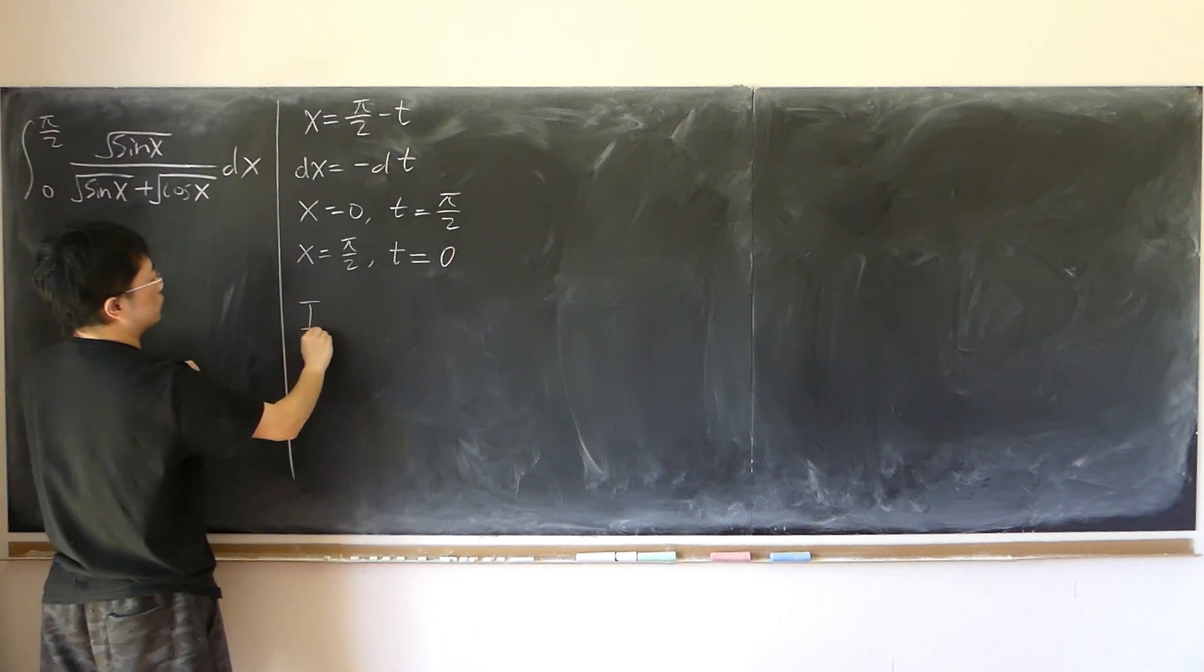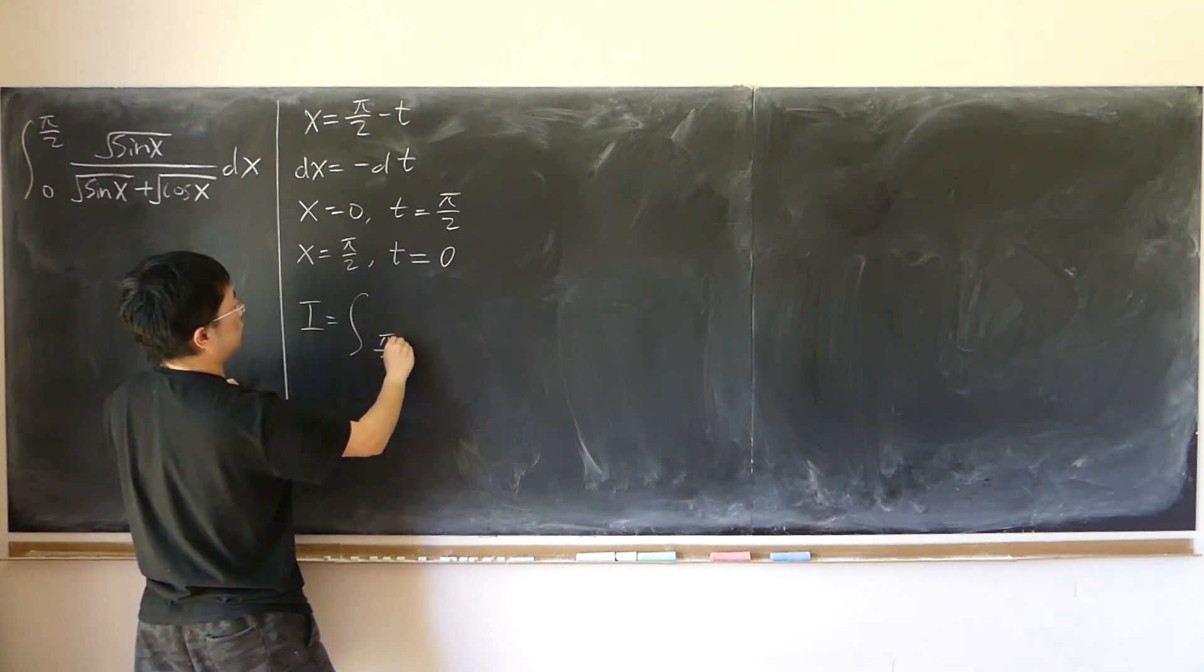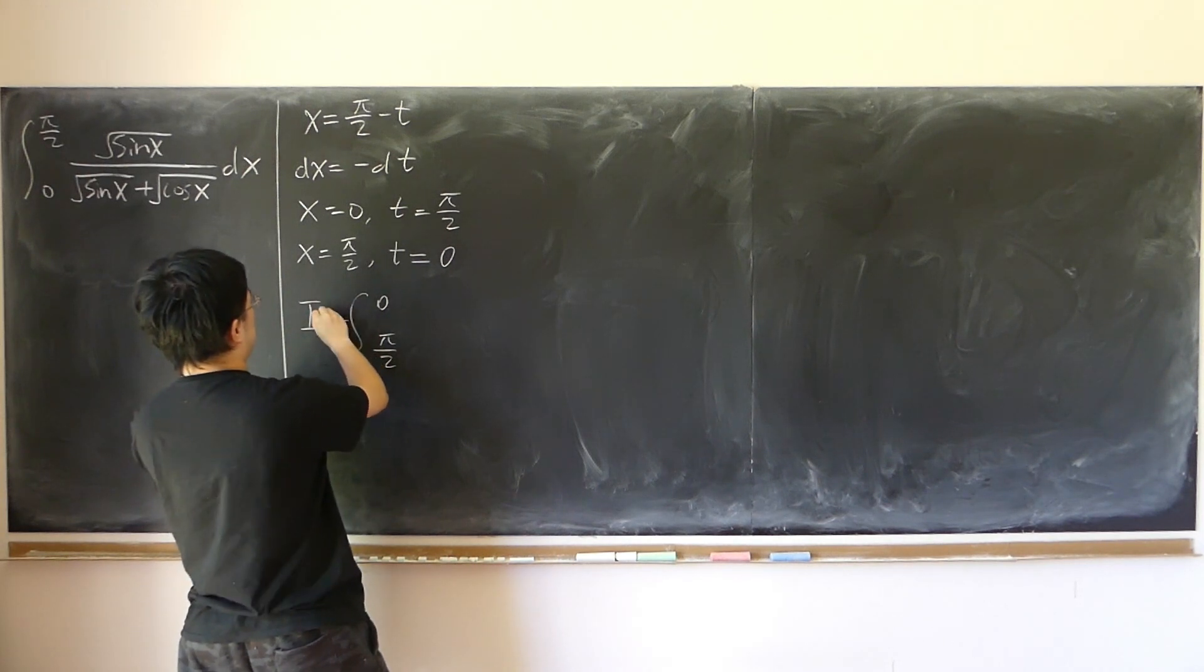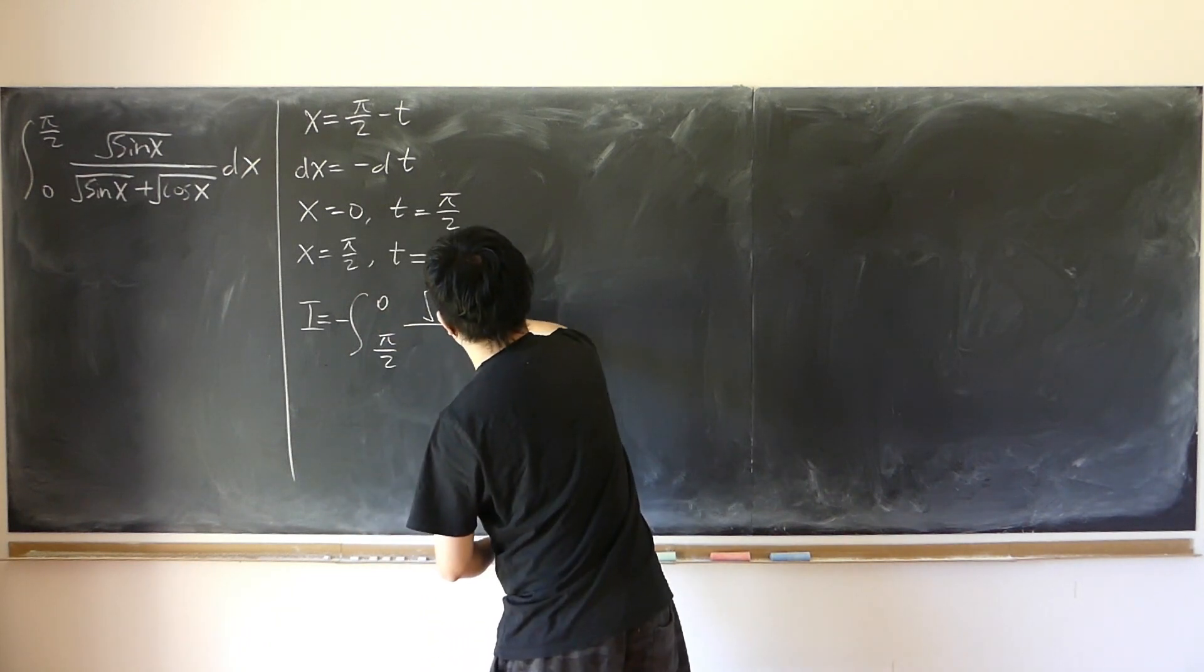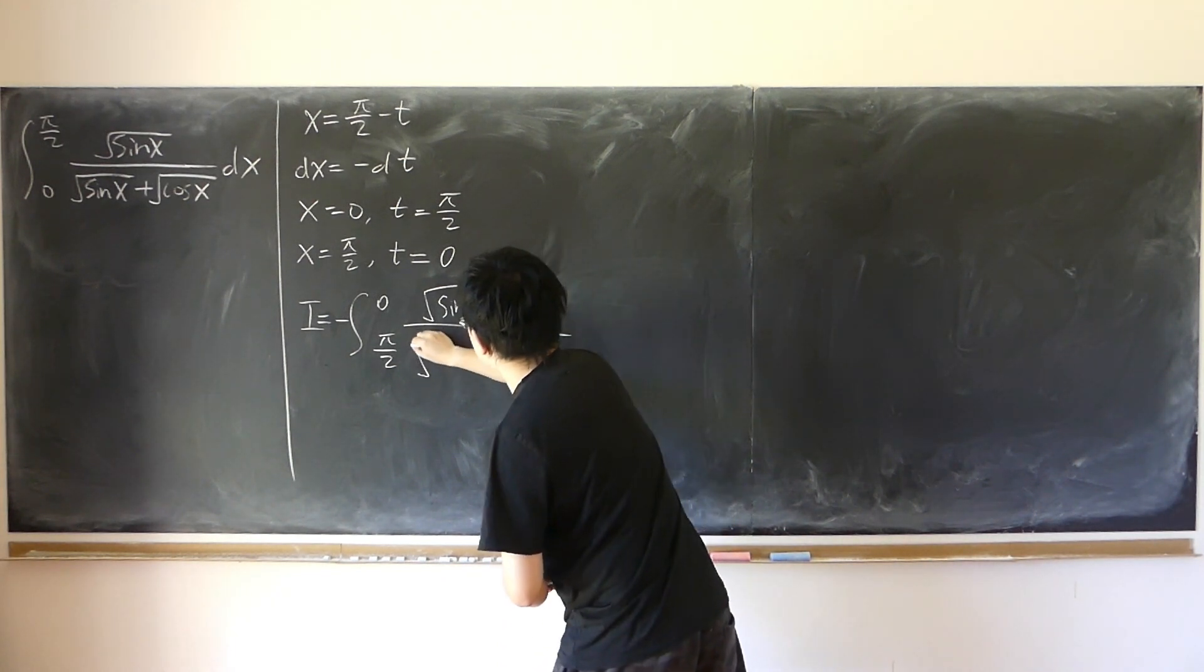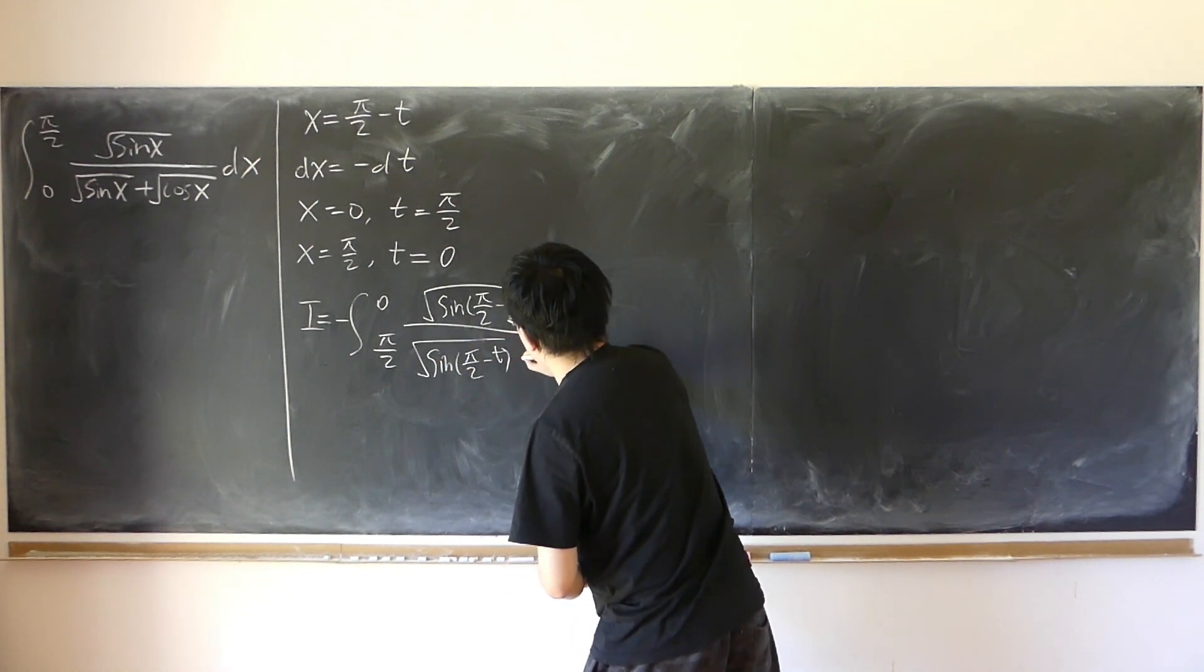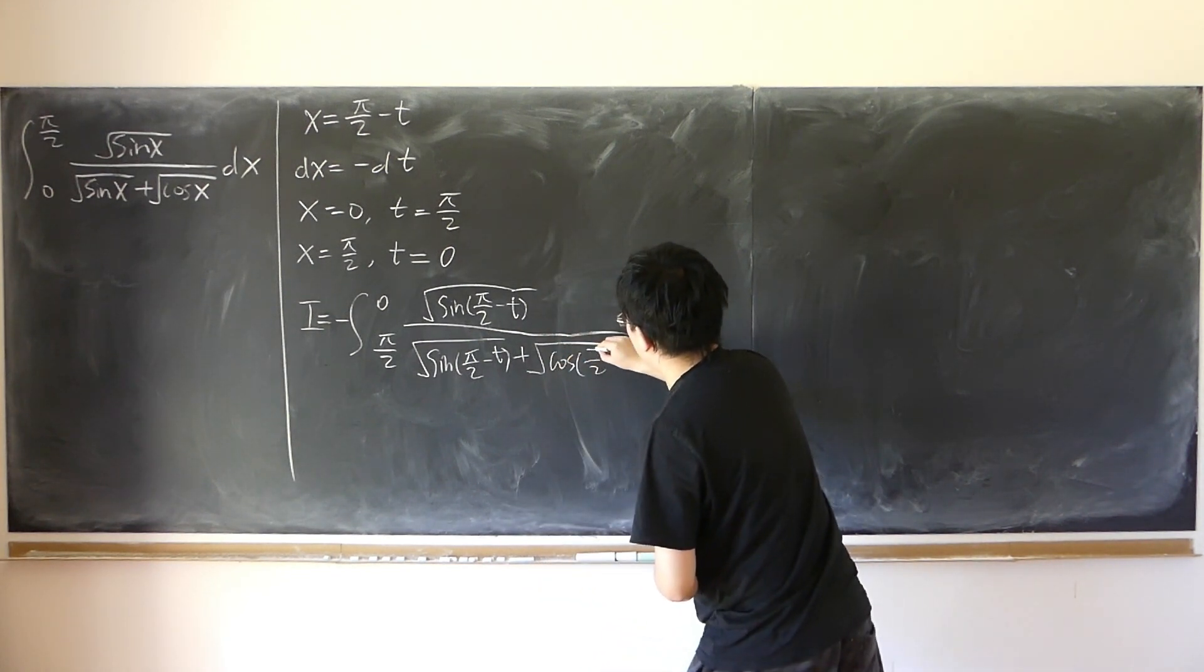So the original integral equals one-half pi to 0. There's a negative sign coming out. Negative of square root of sine x becomes one-half pi minus t. And square root sine one-half pi minus t plus square root of cosine one-half pi minus t.